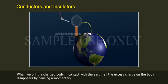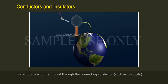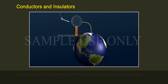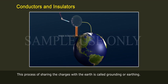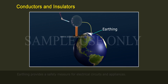When we bring a charged body in contact with the earth, all the excess charge on the body disappears by causing a momentary current to pass to the ground through the connecting conductor, such as our body. This process of sharing the charges with the earth is called grounding or earthing.